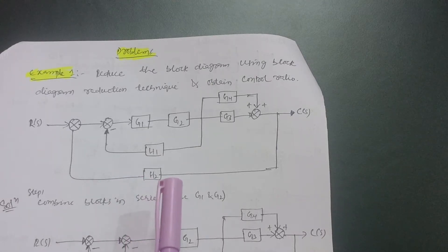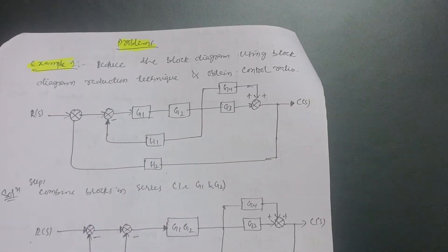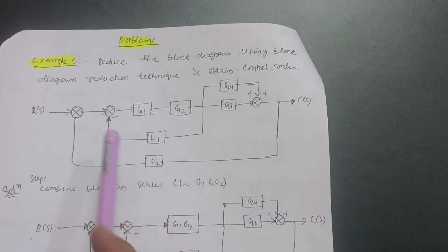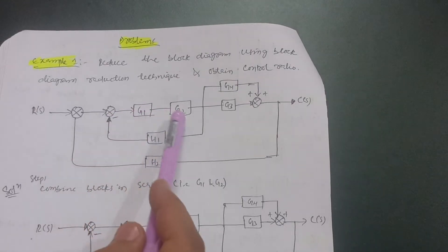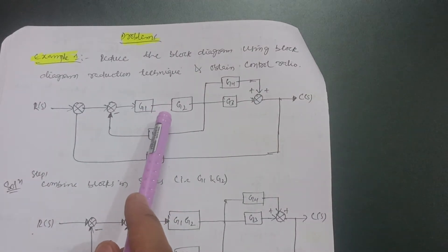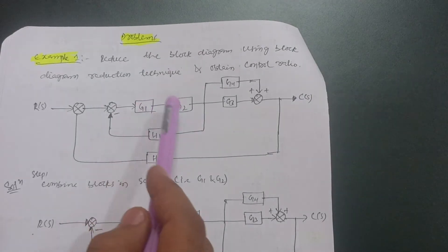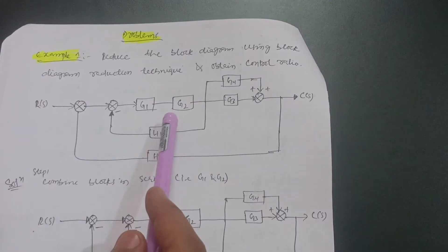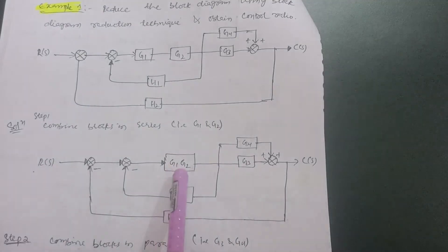As I earlier mentioned, there are seven rules which you should remember. We will discuss them in the problem itself. Let us reduce this block diagram. First of all, observe here — these are the two summing points, and these two blocks are in series. You can easily combine two blocks that are in series by multiplying them. So G1 into G2 — it becomes one box: G1G2.